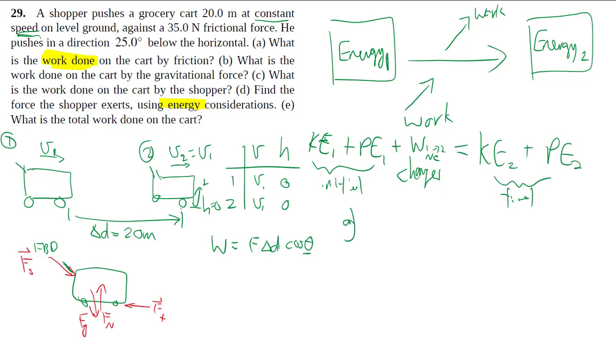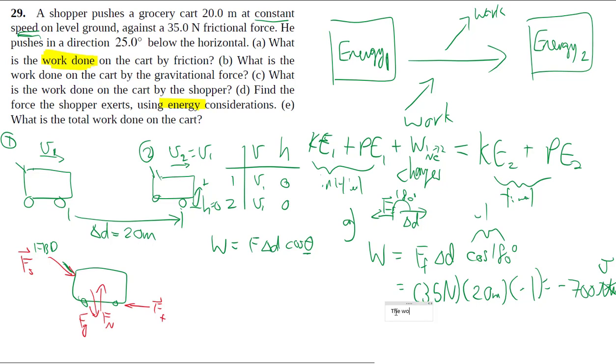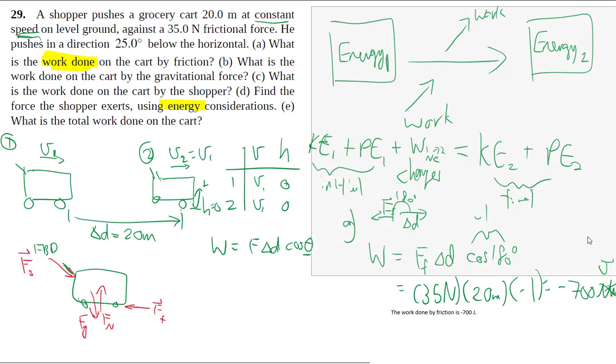Part A, we want the work done by friction. When we talk about friction, we have our friction force that way. Our displacement is that way. So this angle here is 180 degrees. So that's my theta. So when we need to work out the work term, we have the friction force times my delta D. These are all just magnitude. Times my cosine 180 degrees. And that's going to be negative one. So you got 35 newtons times 20 meters, negative one. So we get negative 700 newton times meter, which we define as a joule unit of energy. So really quickly, the work done by friction is negative 700 joules. Negative meaning it takes energy out of the cart, trying to slow it down.